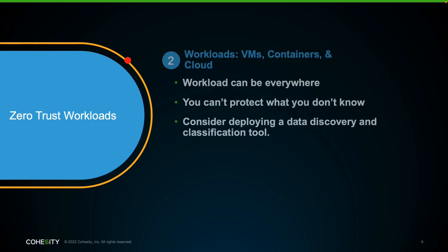Zero trust workloads. As mentioned earlier, data and workloads can reside within your on-premises data center, at the edge like branch offices, and in the cloud. This causes data fragmentation — the proliferation of data across multiple locations — making managing and securing data challenging and increasing the attack footprint for cybercriminals. Consider utilizing a data discovery and classification tool. This tool will help you determine where your production data is and classify data that is sensitive in nature. If sensitive data is found in an untrusted zone, you can move it into a trusted zone with tighter security controls, and this can also help meet regulatory compliance.